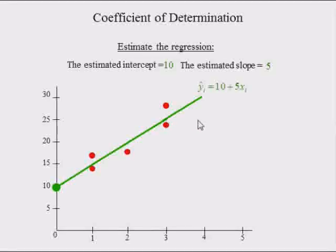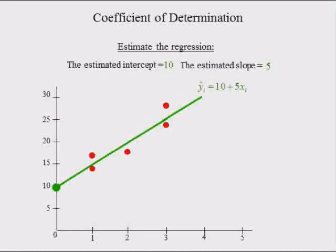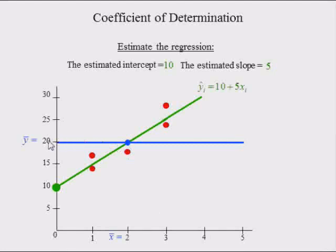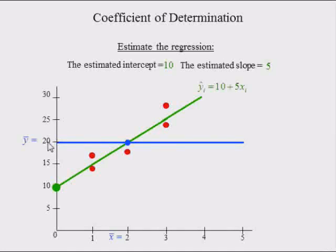If we run a fourth ad, the number of cars we expect to sell will increase by 5. The mean of x and y were 2 and 20, so every regression line will pass through the point corresponding to the average x and the average y. In our data, the simple mean of y was equal to 20 and the simple mean of x was equal to 2.